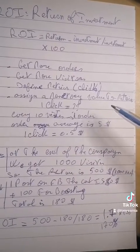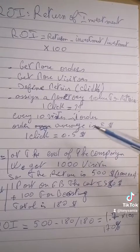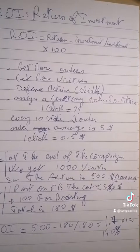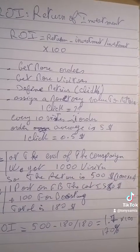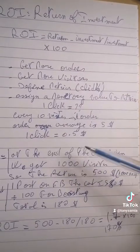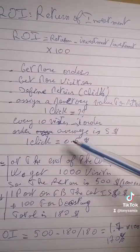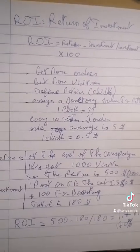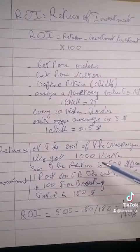We have to assign a monetary value to this metric. Based on historical data, for every 10 visits we usually get one order, and the average order is $5. So the value of every click is $0.50.